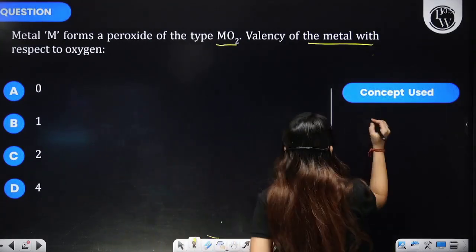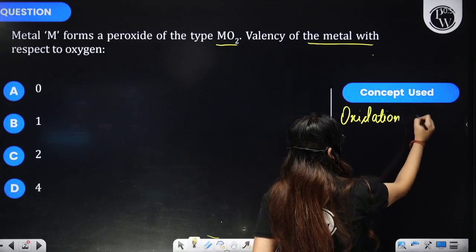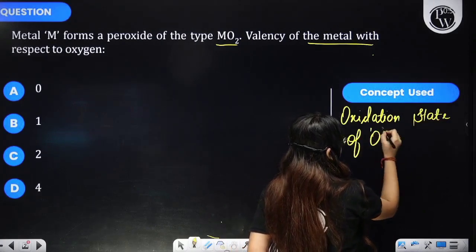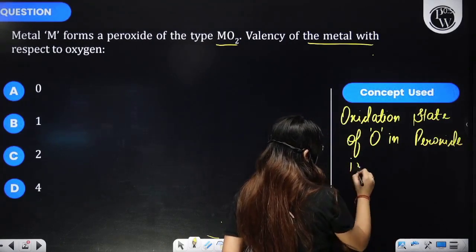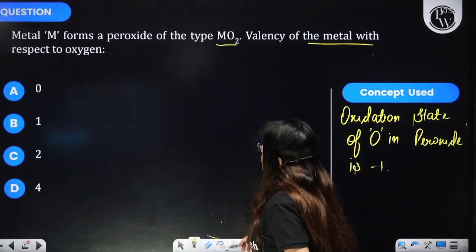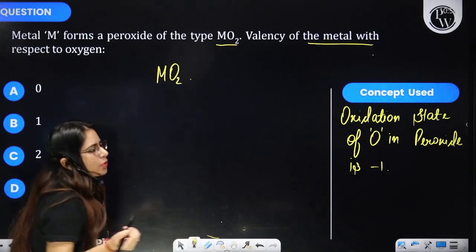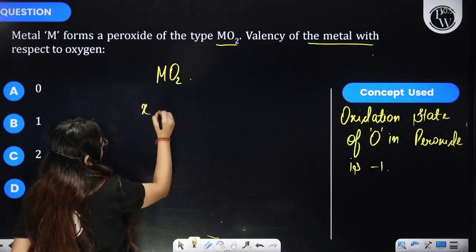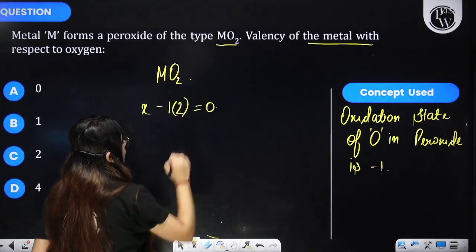The key concept of this question is that the oxidation state of oxygen in a peroxide is minus 1. On the basis of this concept, let's solve. We have been provided with MO₂. Let us suppose the oxidation state of the metal is x, and for oxygen it is minus 1. So for 2 oxygens it will be 2 times minus 1, and the total equals 0.